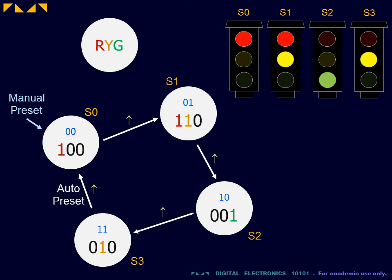For instance, the red light will be connected to the states S0 and S1.